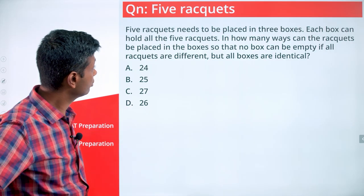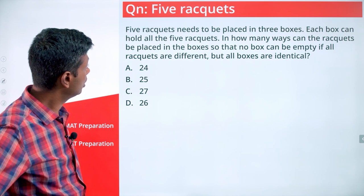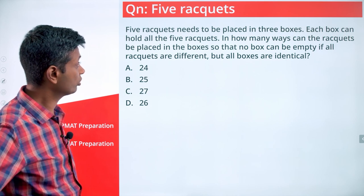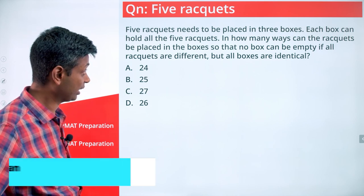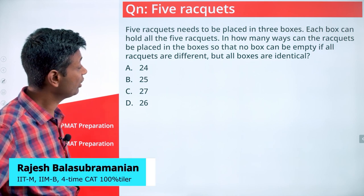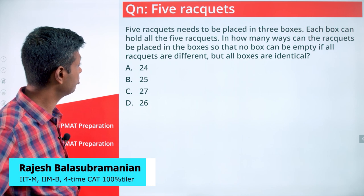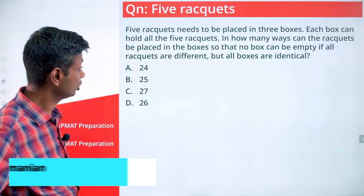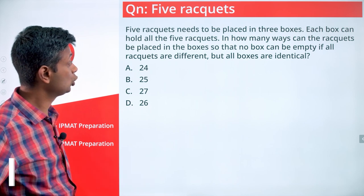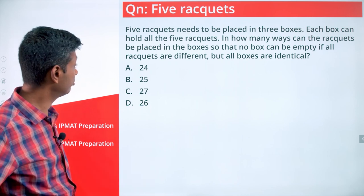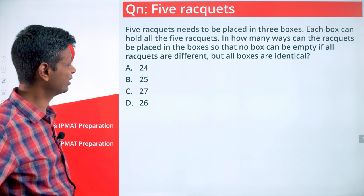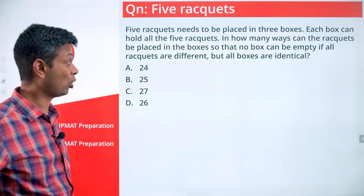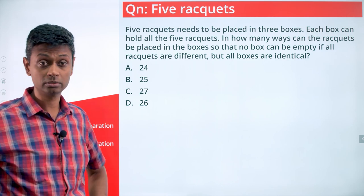Five rackets need to be placed in three boxes. Each box can hold all five rackets. In how many ways can the rackets be placed in the boxes so that no box can be empty, if all the rackets are different but all boxes are identical?